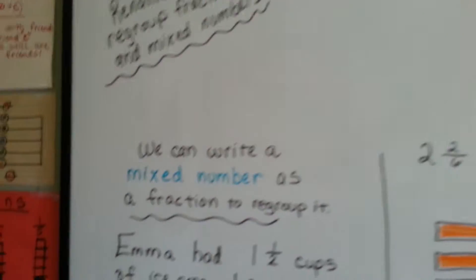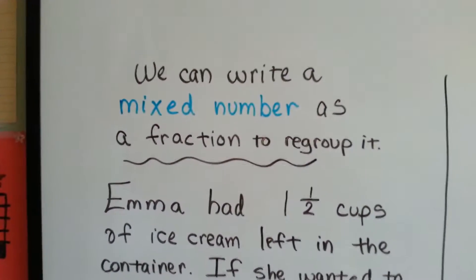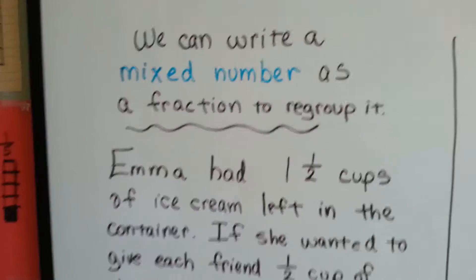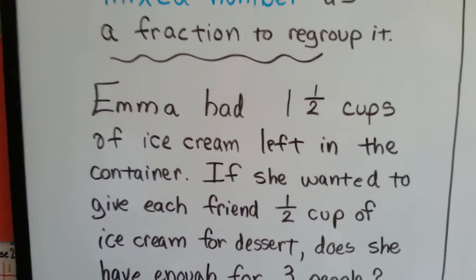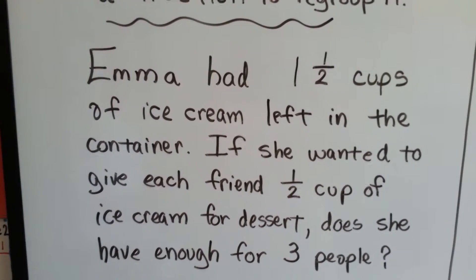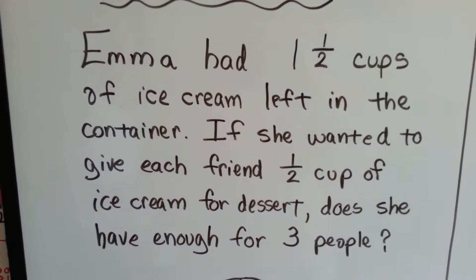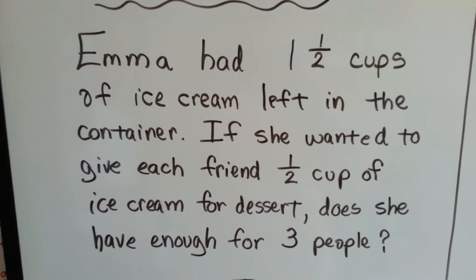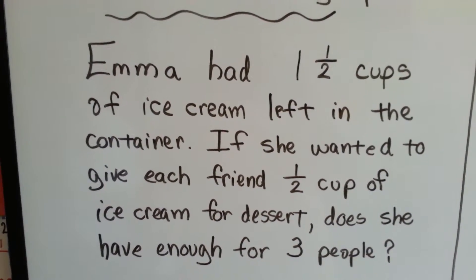We can write a mixed number as a fraction to regroup it. Emma had one and a half cups of ice cream left in the container. If she wanted to give each friend half a cup of ice cream for dessert, does she have enough for three people?